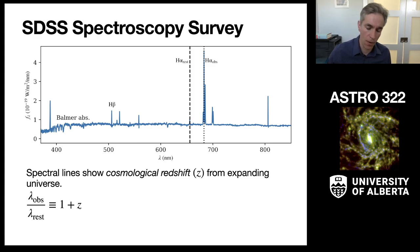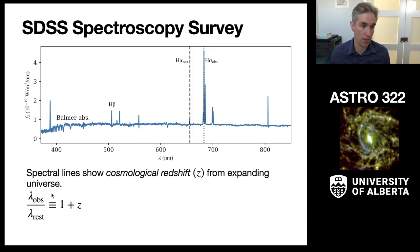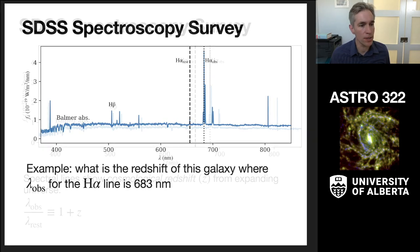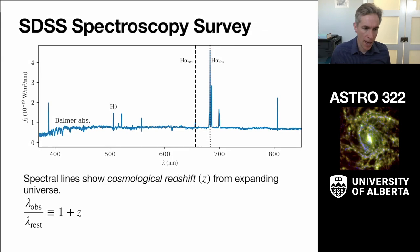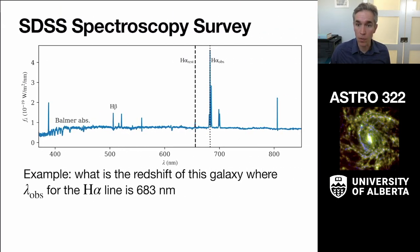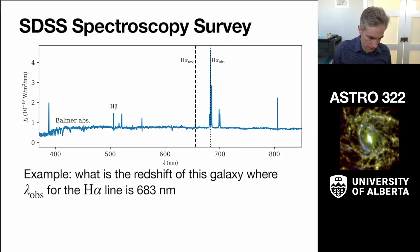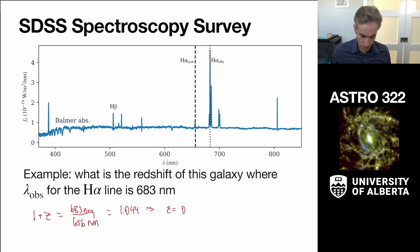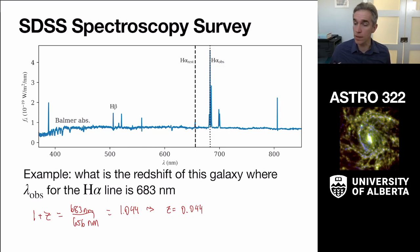We define redshift as the ratio of the observed wavelength relative to the rest wavelength: observed over rest equals 1 plus z. For this system, if we observe H-alpha at 683 nanometers, then 1 + z = 683 / 656 = 1.044, which implies z = 0.044. It's a dimensionless number representing the shift of the wavelength.